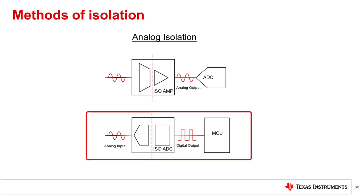Amplifier gain error can be avoided with analog isolation by choosing an isolated data converter, like an isolated delta-sigma modulator, which directly samples analog input signals. These solutions achieve high-resolution isolated inputs by being optimized for direct connection to shunt resistors or other low-voltage level signal sources. You can learn more about isolated amplifiers and data converters in the isolated amplifiers and modulators section of the Precision Lab series.